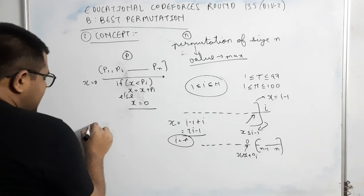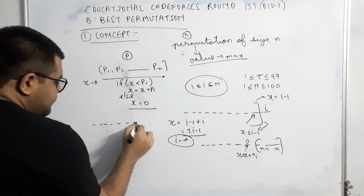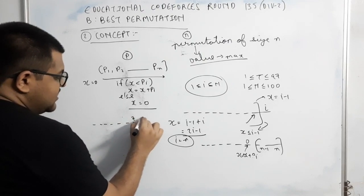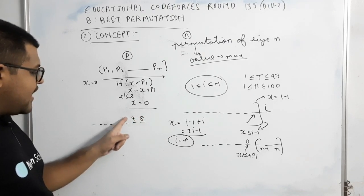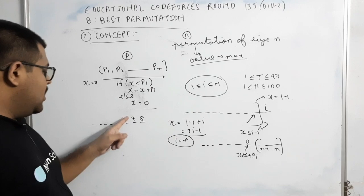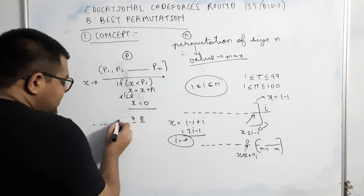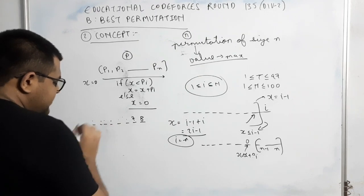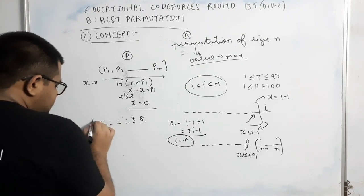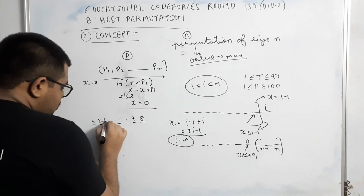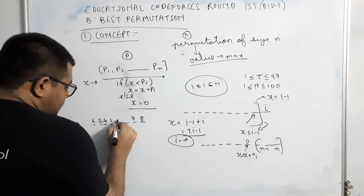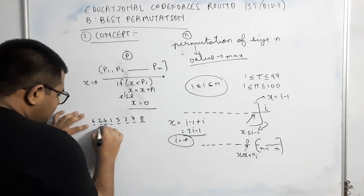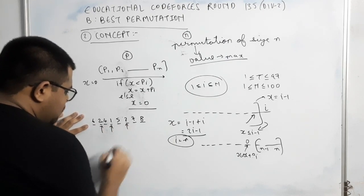Easy way out क्या हो सकता है? अगर मान लूं, अगर मेरा n even है. For example, 8 elements है. तो मैं क्या करूंगा? 7 or 8 की तो position fix हो गई. यहां पे मुझे x 0 चाहिए. तो मैं क्या target करूंगा? कि this element is greater than this. This element is greater than this. This element is greater than this. For example, 6, 2, 4, 1, 5, 3. इससे क्या होगा? हर एक even position पे x की value 0 हो जाएगी.